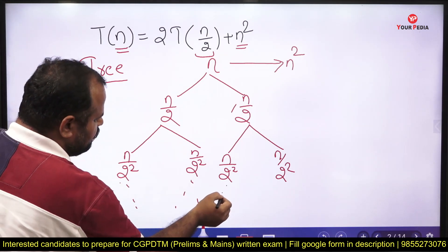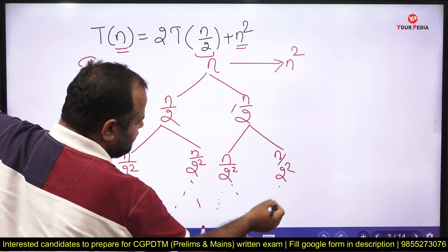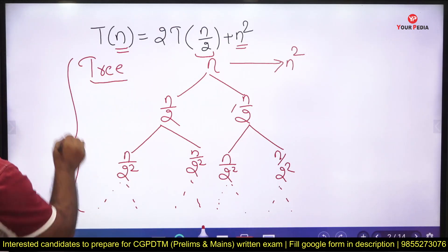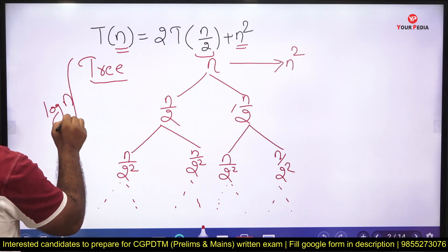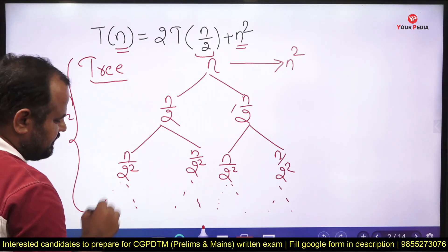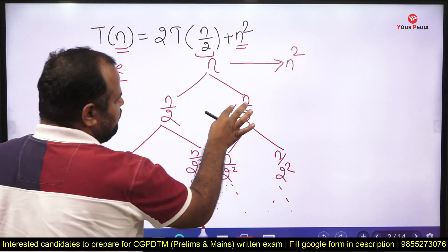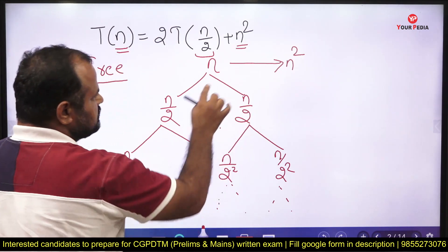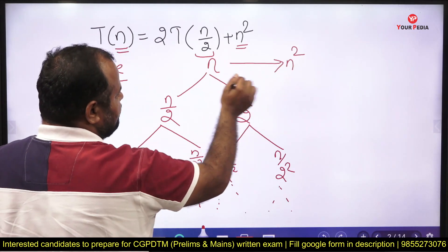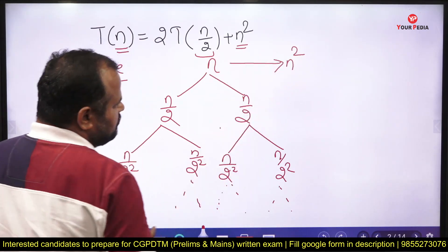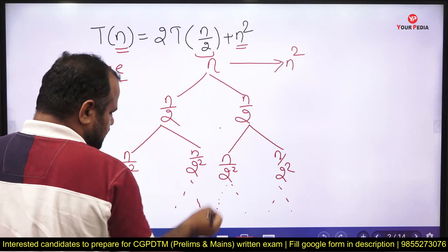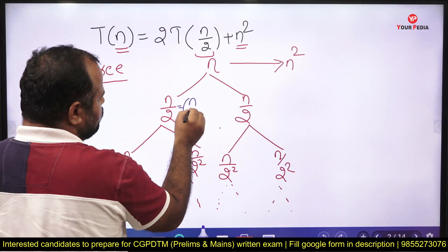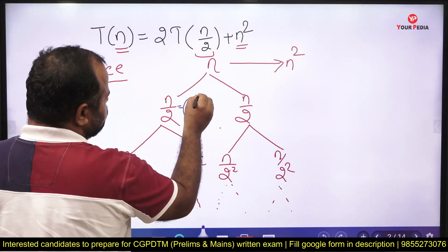Since the problem always divides into two equal parts, the height of this tree is log n. Now the main task is finding the cost at each level. The cost at each node is the square of the current input size. For a sub-problem of size n/2, the cost is (n/2)².